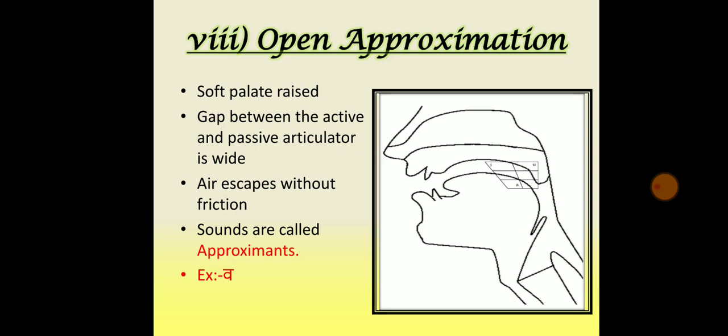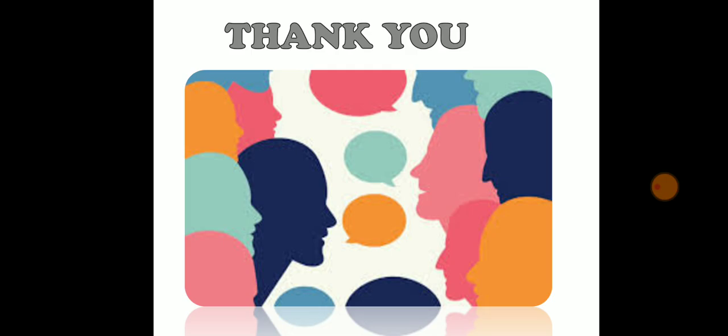The last stricture is open approximation. The soft palate is raised, so the nasal passage of air is completely closed. If the active articulator is brought close to the passive articulator so that the gap between them is wide, the air will escape through this gap without any friction. Sounds produced with this stricture are called approximants. For example, the initial sounds in the English words yes and wet. This completes the detailed description of the classification of consonant sounds. Thank you.